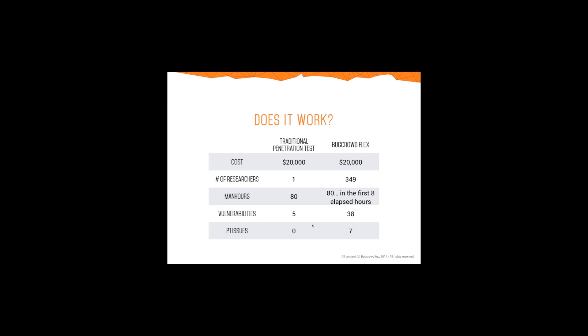In terms of vulnerabilities found and treated as issues, the traditional pen test found five; our researchers found 38. That's coverage. But in terms of depth — finding really severe issues, the kind you have to page engineers about in the middle of the night — the traditional test didn't find any; we found seven. That's because of this model: you've got a group of people competing against each other with different skillsets, and their incentive is based on actually getting rewarded for what they find.